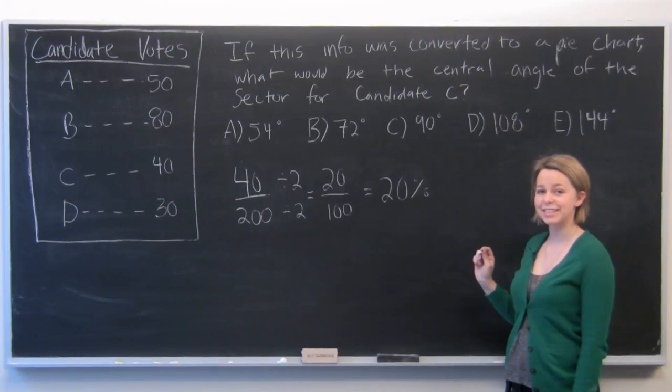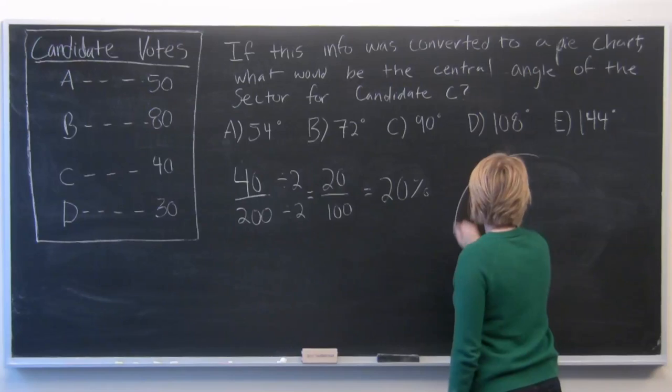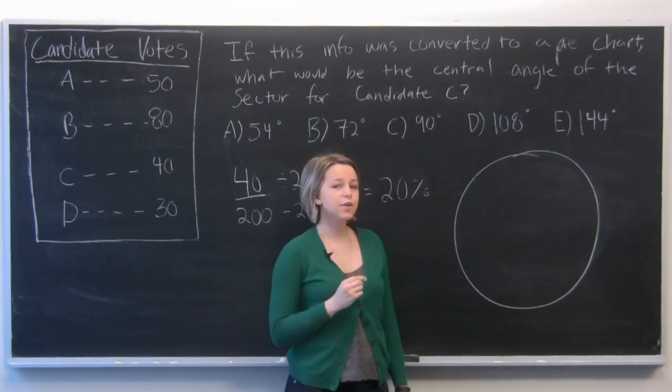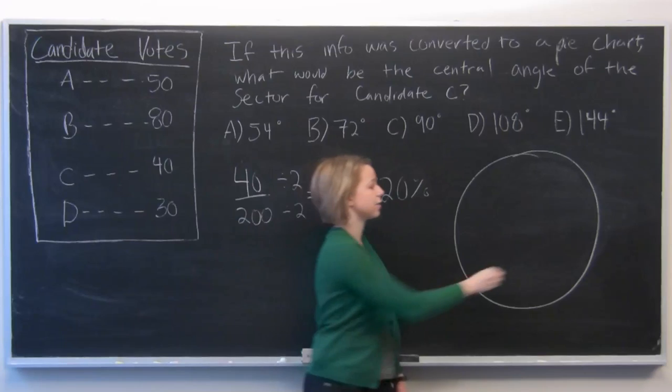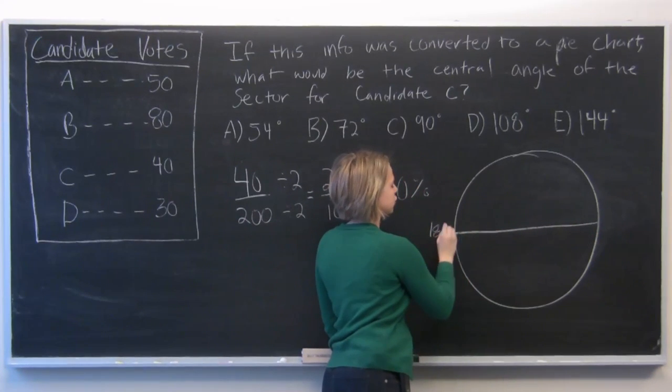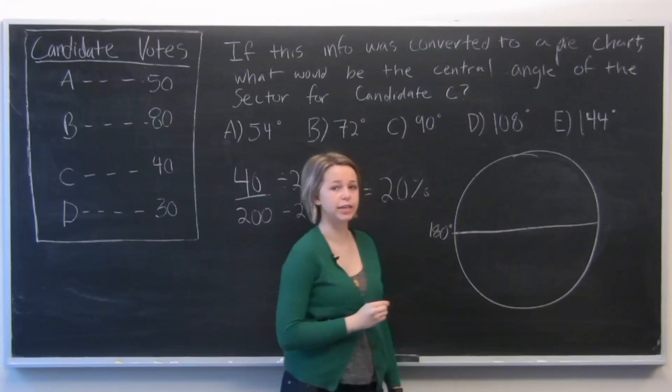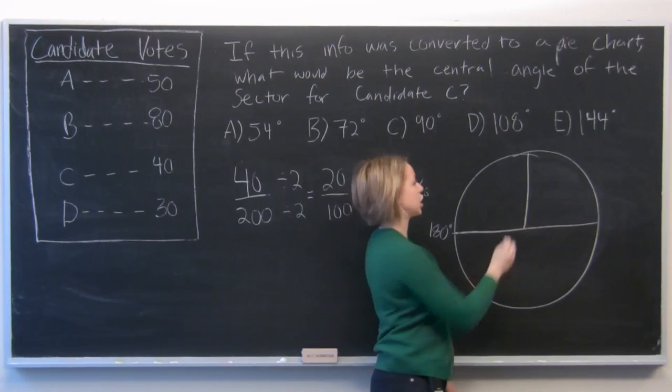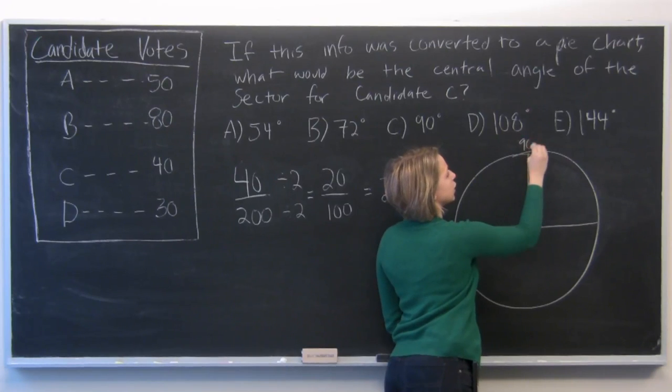And the next thing we're going to do is sketch a pie chart. So we know that if candidate C had received 50% of the vote, the central angle would be 180 degrees. And if he received 25% of the vote, it would be a quarter of the pie chart at 90 degrees.